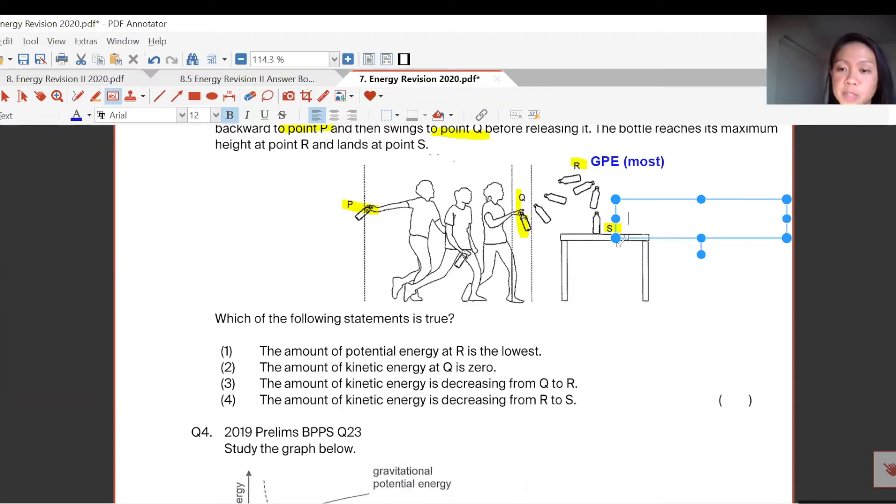Once it drops to the table, you have movement, then it will stop at point S. It's not moving anymore. If you're not moving, KE equals zero. For GPE, there is still GPE because it's still above ground on the table. This is the GPE here.